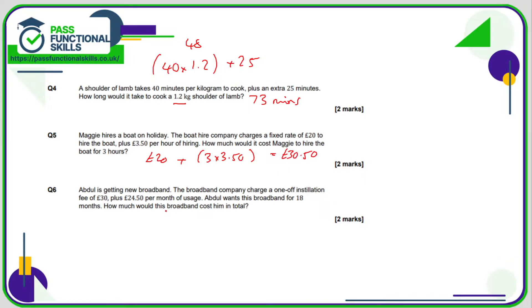Question number 6. So there's a one-off fee of £30 plus £24.50 per month. And Abdul wants it for 18 months, so he's going to pay the one-off installation fee plus the £24.50 multiplied by 18. And £24.50 multiplied by 18 is £441, so we just need to add the 30 on top. We're going to get a total of £471.